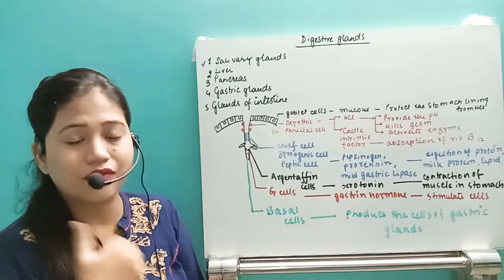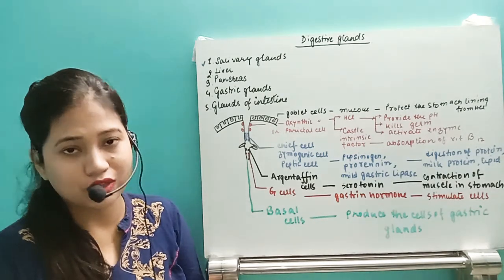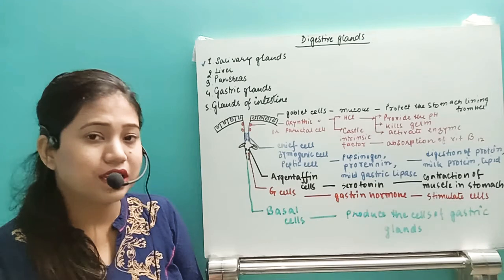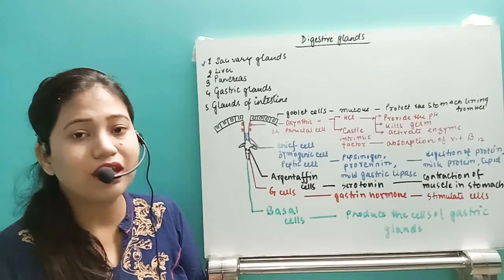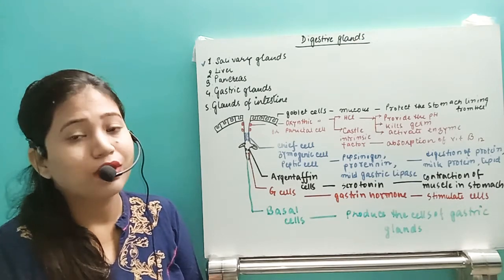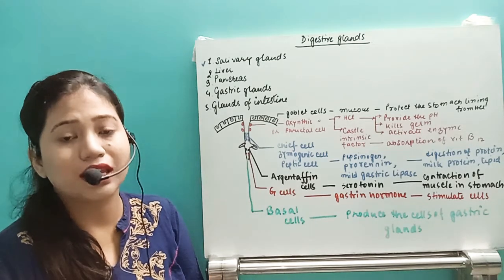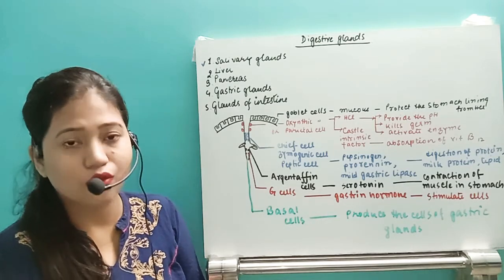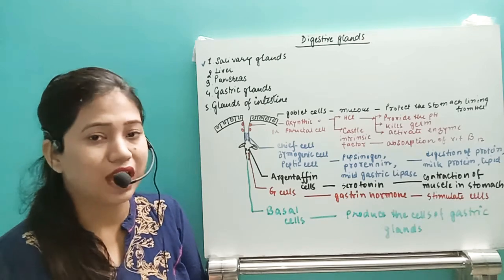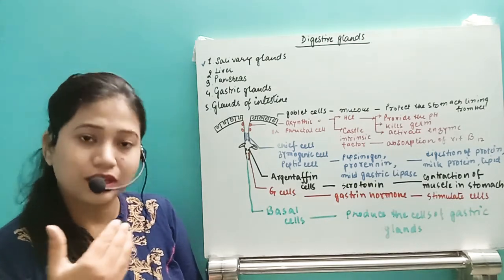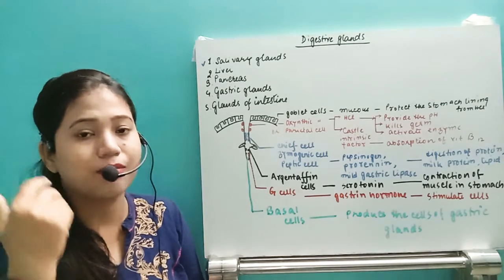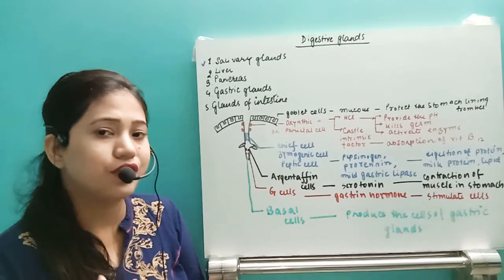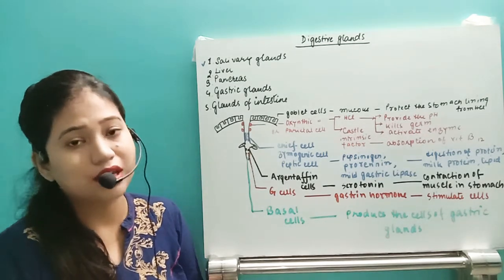After the buccal cavity we have the pharynx, and in the pharynx region there is no digestive gland present. Then comes the esophagus — remember that the esophagus will not have any digestive juice of its own. The food mixed with salivary amylase will continue digesting in the region of the esophagus, but no starch digestion occurs because of the esophagus itself.